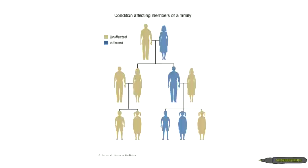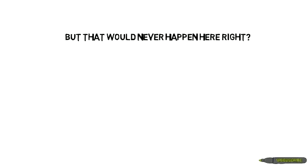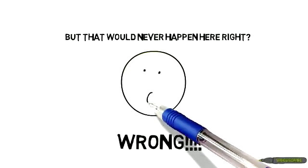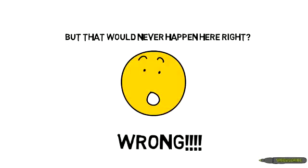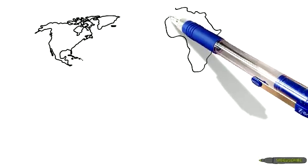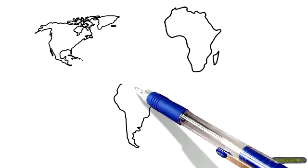Today, almost every individual with Huntington's disease in the Lake Maracaibo region can trace the origin of their genetic mutation back to that single individual. You may be thinking this can never happen here — but you'd be wrong. Occurrences of populations with a high frequency of Huntington's disease due to the founder's effect have occurred in both New York and South Africa, along with South America, all within the past 200 years.